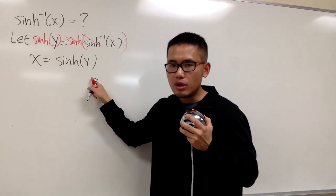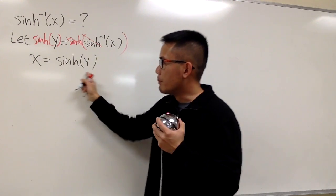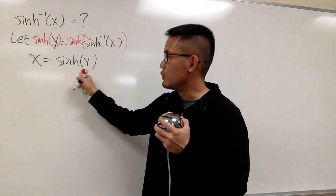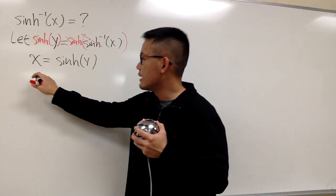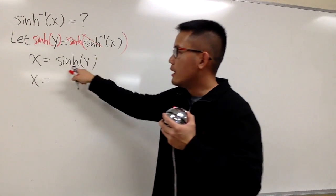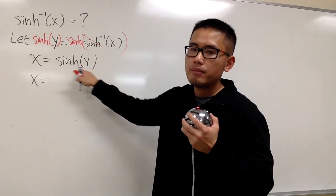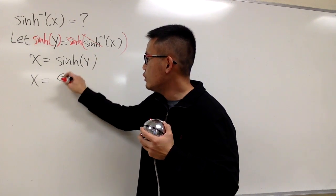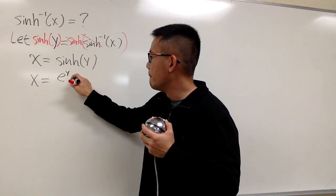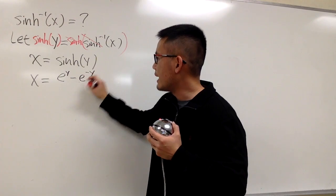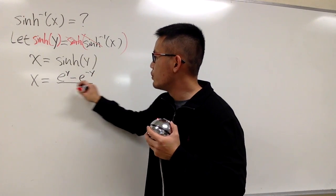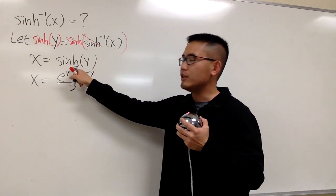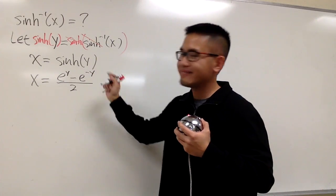Once we have this, we can apply the definition of the original sinh to it. x is just x, and now the input is y, so this becomes e to the y minus e to the negative y, all over 2. This is just the definition of sinh of whatever you have inside.